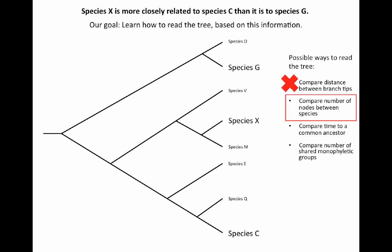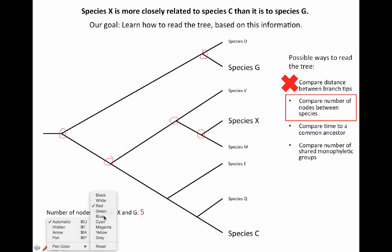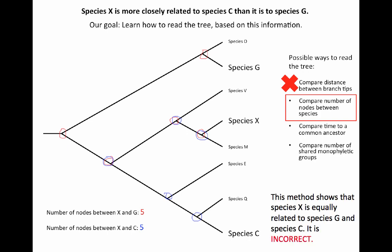Let's compare the number of nodes between species. Between species X and G we have one, two, three, four, five nodes. Between species X and C we also have one, two, three, four, five nodes. So by this method, species X appears equally related to species G and species C. But we know that's not true, so this method of reading the evolutionary tree must not be correct either.